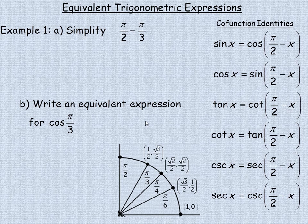In this lesson, we're going to take a look at equivalent trigonometric expressions. Listed on the right side here are what are called the cofunction identities, which relate sine and cosine, or tan and cotan, or cosecant and secant.